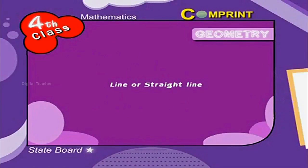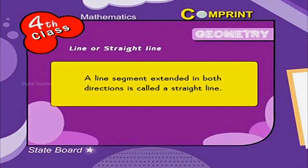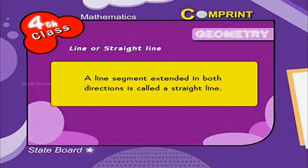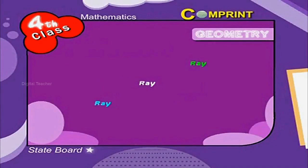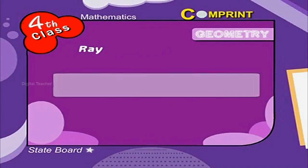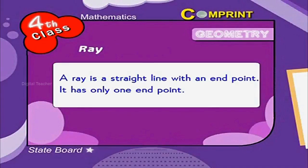Straight line. A line segment extended in both directions is called a straight line. Look at the example.